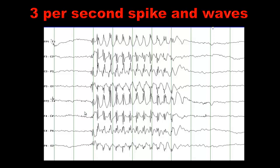3 per second spike and wave — these green lines are separated by 1 second each, and in each second you see approximately 3 spikes and 3 waves, so that's why it's called 3 per second spike and wave discharges. This is a typical pattern seen in childhood absence epilepsy. Patients with childhood absence seizures can space out for only a few seconds, typically 3 to 10 seconds, with no significant post-ictal confusion or disorientation. These need to be differentiated from complex partial seizures, as discussed in a previous tutorial.